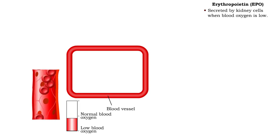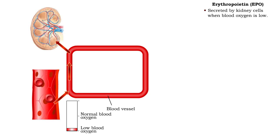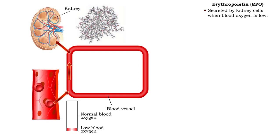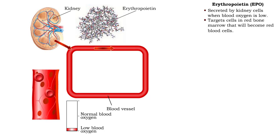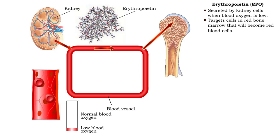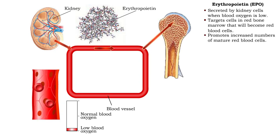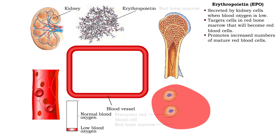Low blood oxygen stimulates kidney cells to secrete EPO. EPO targets precursor erythrocytes in the hemopoietic tissue and causes them to differentiate and proliferate.